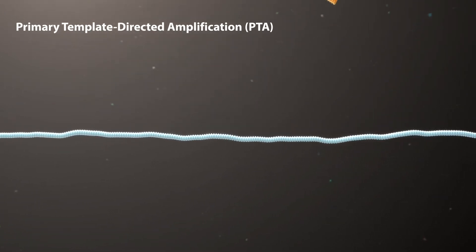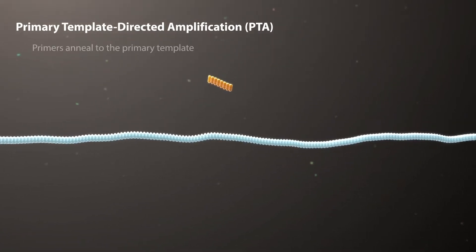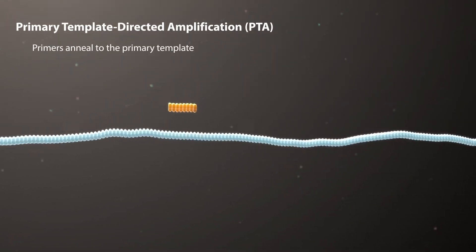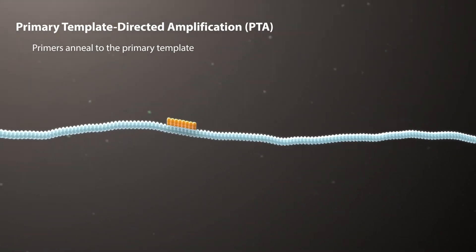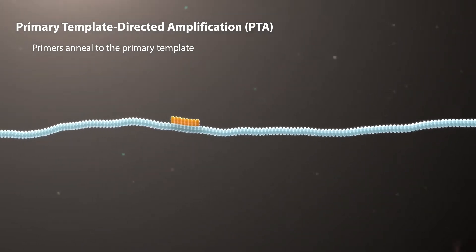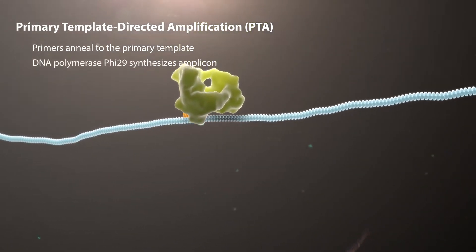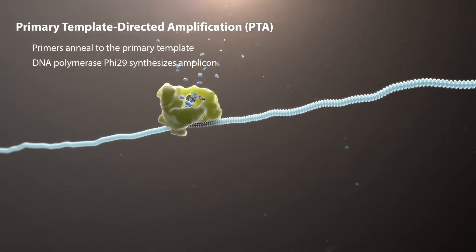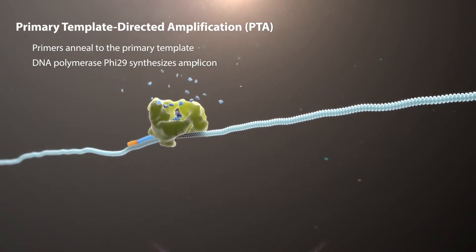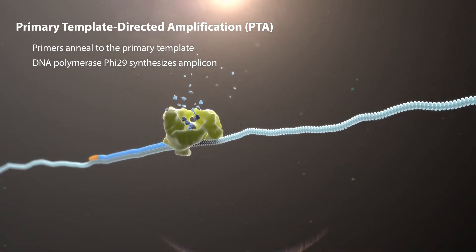Similar to current methods, primers first anneal to the target genome, called a primary template. When DNA polymerase Phi-29 binds to the primer and template, it synthesizes a complementary strand from the primary template.